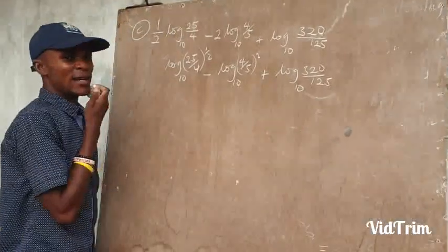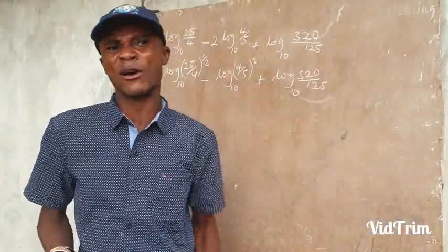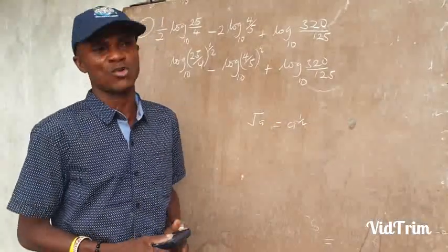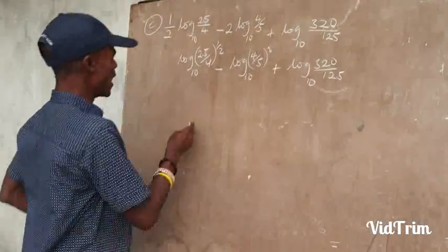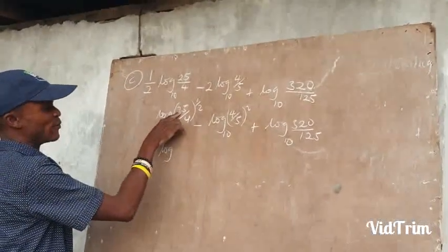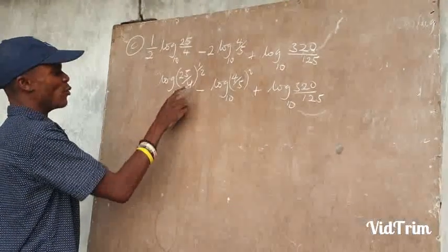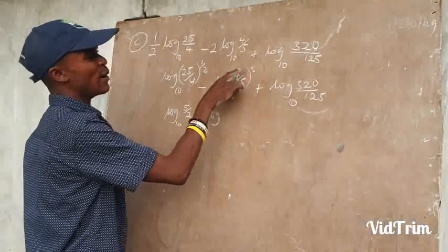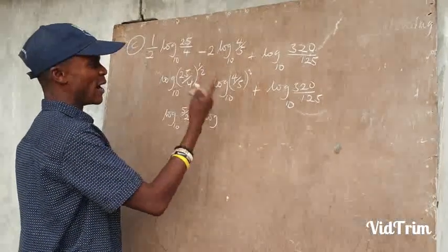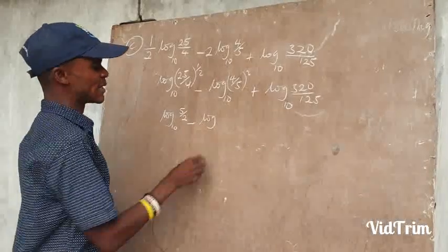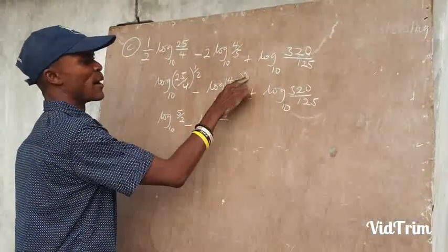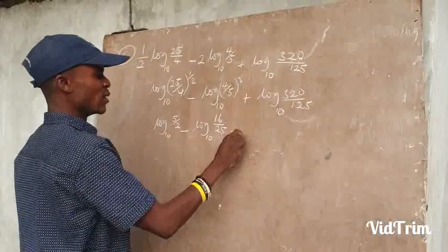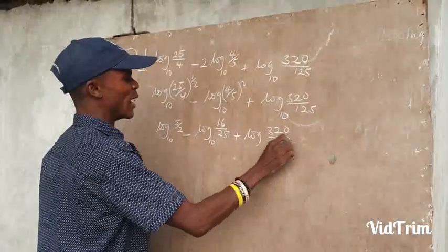We move. In indices, when you see one-half, it means square root. So anytime you see half, it is the same as square root. Applying that: square root of 25 is 5, and square root of 4 is 2, base 10. Minus log of — the power of 2 is affecting 4 and 5. You take them one at a time: 4 squared is 16, and 5 squared is 25. So we have log of 16 over 25, base 10. Plus log of 320 over 125, base 10.